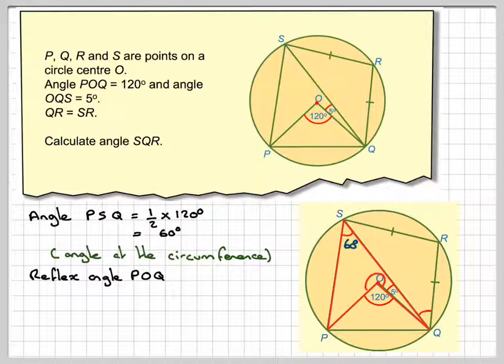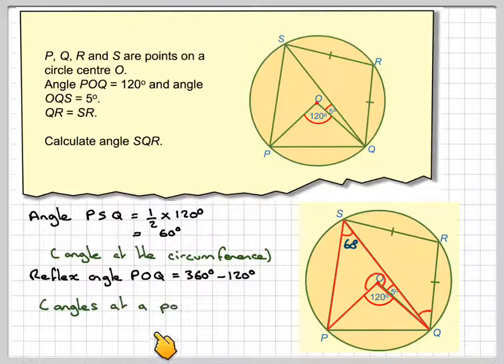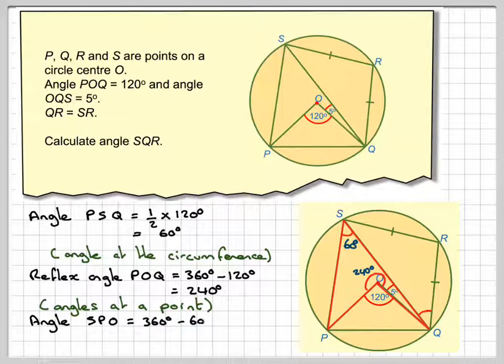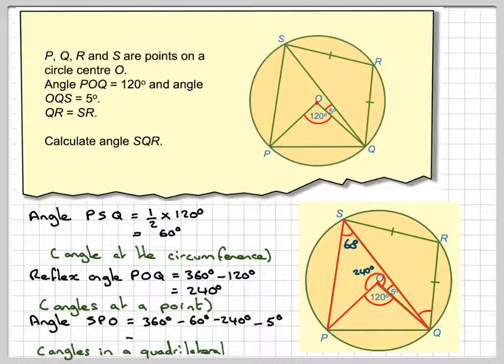Now the reflex angle, so the reflex angle here at the centre, we're going to need this because we're going to calculate all the angles in this quadrilateral here. It's going to be 360 minus 120, the reason being angles at a point add up to 360, that gives me 240, and now that will allow me to calculate this angle here. Angle SPO is going to be 360 minus 60 minus 240 minus 5, which angles in a quadrilateral, which gives me 55 degrees.